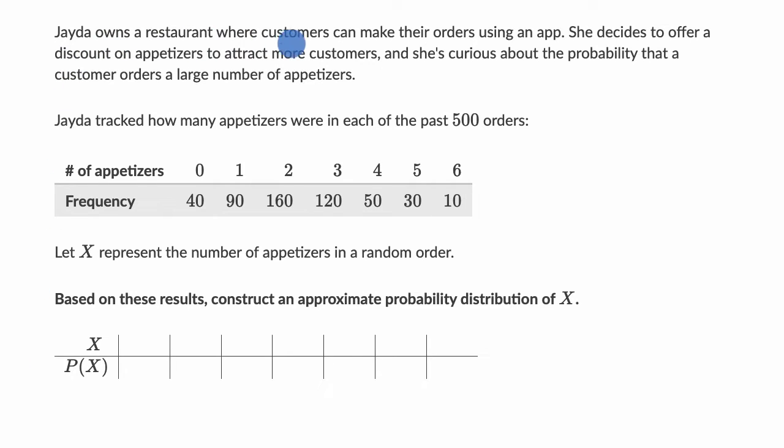We're told that Jada owns a restaurant where customers can make their orders using an app. She decides to offer a discount on appetizers to attract more customers, and she's curious about the probability that a customer orders a large number of appetizers.